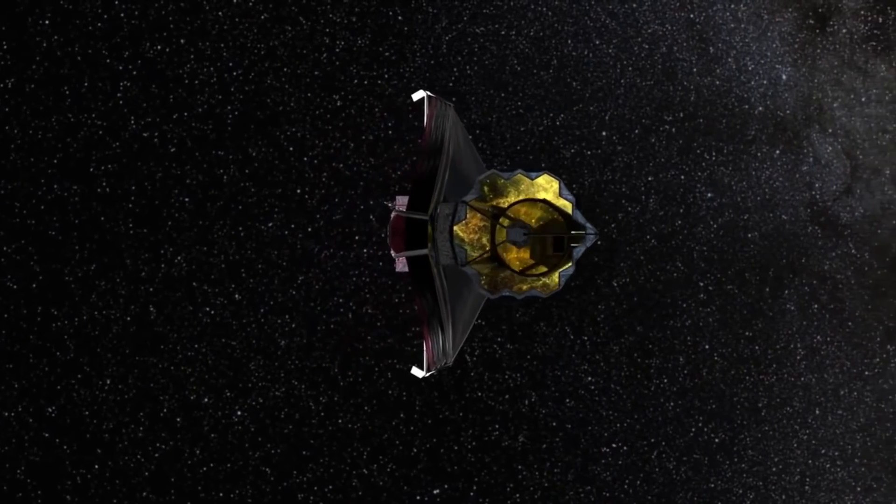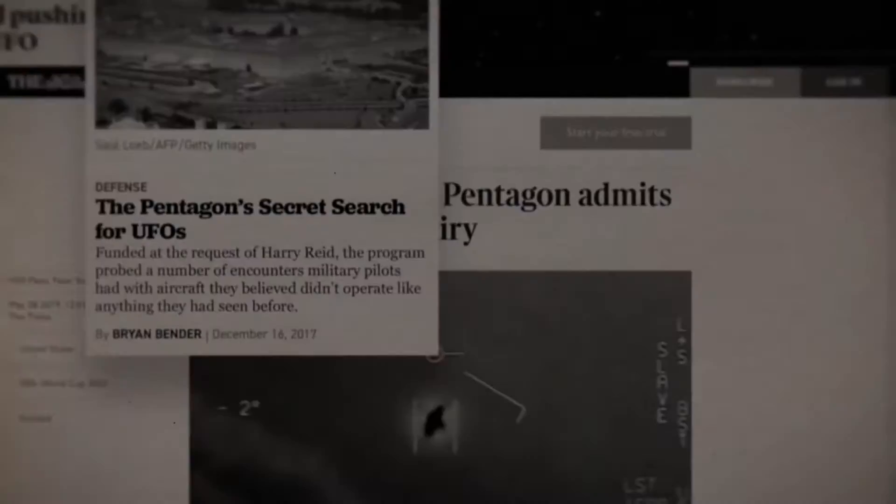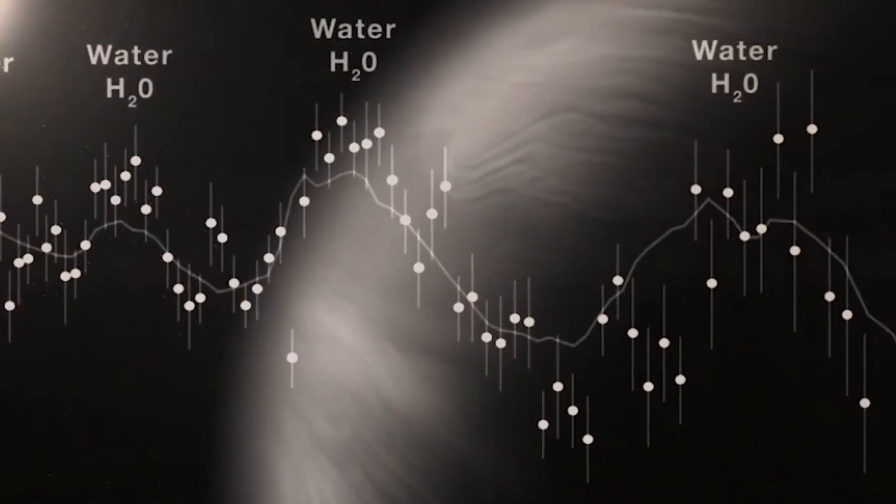For starters, Proxima Centauri is located 4.2 light-years away from Earth, making it rather difficult for Earth-based telescopes to collect enough data on the exoplanet and to study it in depth. But it's not just the distance that makes it difficult to study.